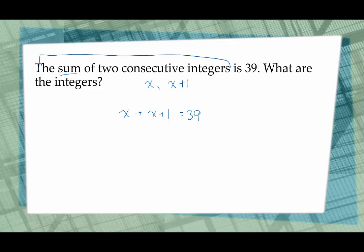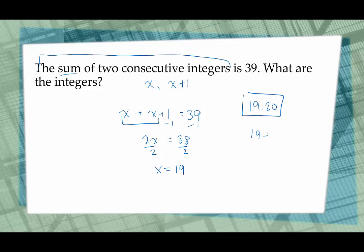Divide both sides by 2, giving me x equals 19. So if the first number is 19, then the next consecutive integer is 20. We have 19 and 20. I can check my work: 19 plus 20 adds up to 39. So those are the correct consecutive integers.